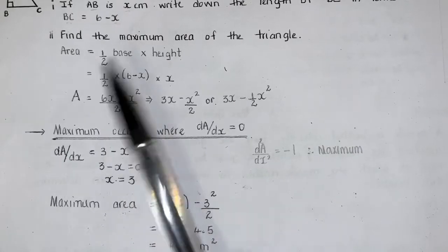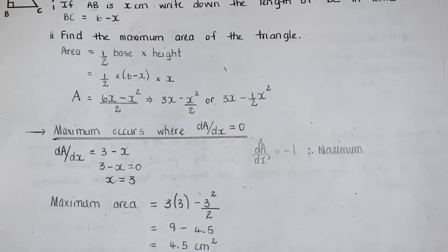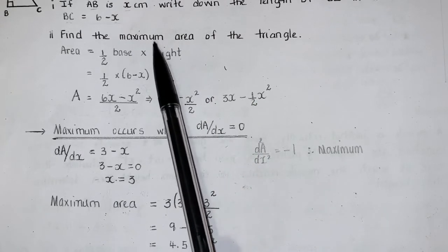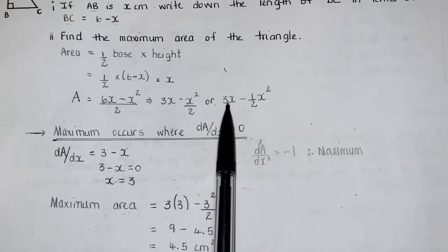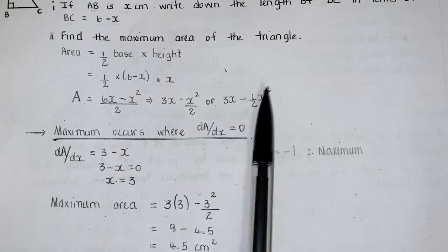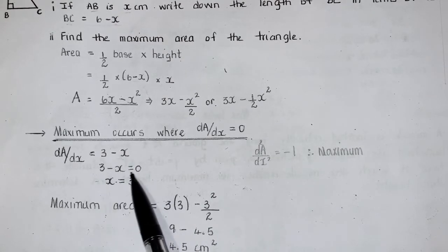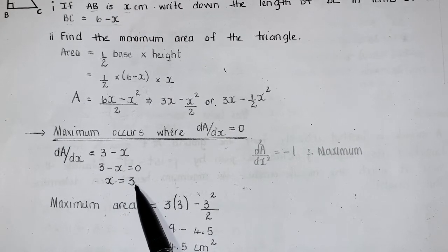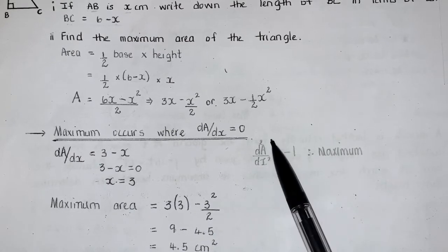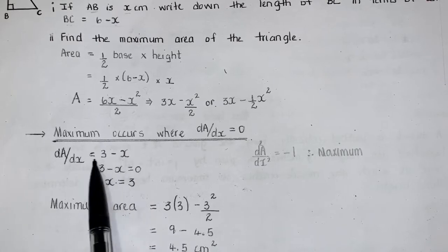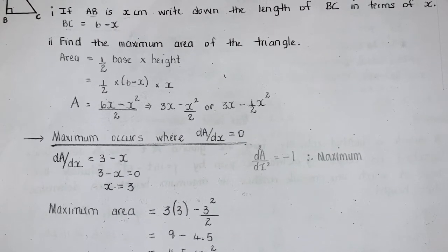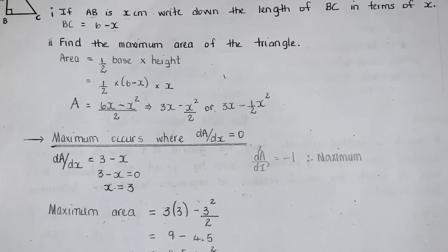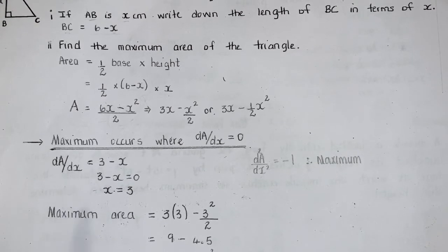The question requires us to find the maximum area of the triangle. The keyword here is maximum, so we are going to differentiate that area function and then equate it to 0. This is our area function, and when we differentiate it, we'll end up with 3 minus X. When we equate it to 0, we end up with X equal to 3. We can test to see if it's an actual maximum with either the first or second derivative test. I chose to use the second derivative test, and when I differentiate the gradient function, I'm left with negative 1. Since the second derivative is negative, it is a maximum when X is equal to 3.